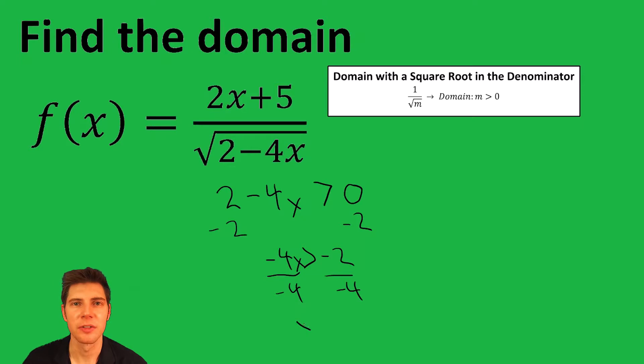Negative 4x divided by negative 4 is x. Negative 2 divided by negative 4 is 1 half. And then since it was a negative number, we changed the direction of the sign.